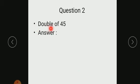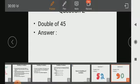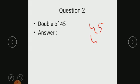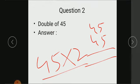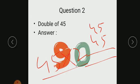Double of 45: 45 plus 45, you will get the answer. Or if you multiply 45 into 2, then also you will get the answer. So it becomes 90.